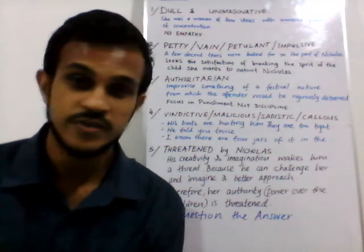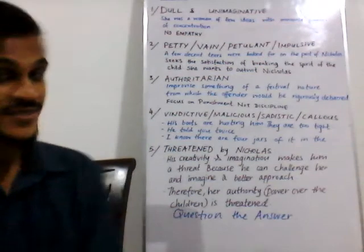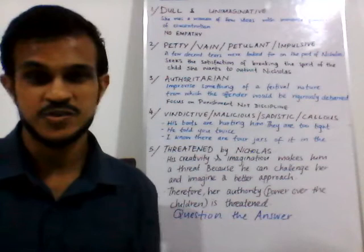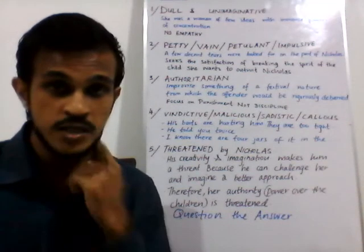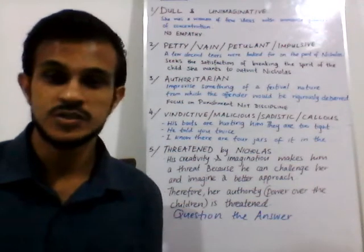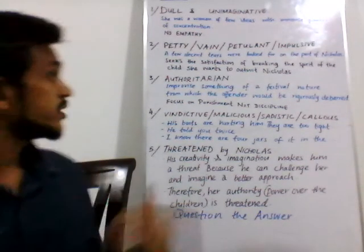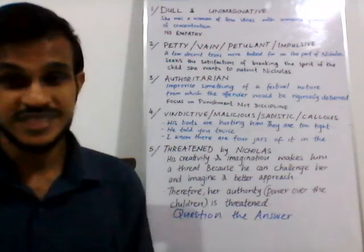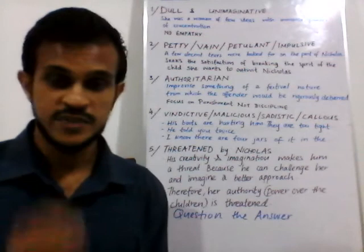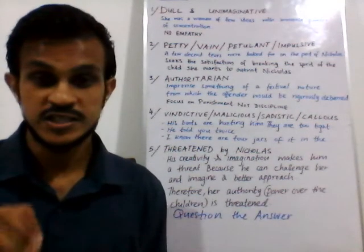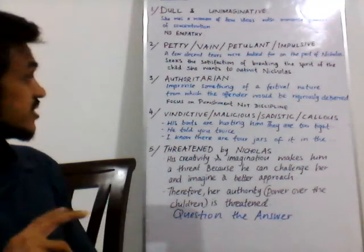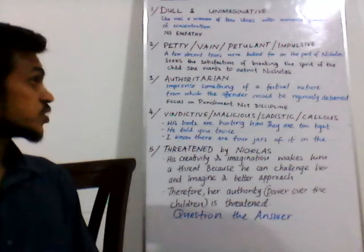The second characteristic is that she is petty, vain, petulant, impetuous, and impulsive — words that show she is quite immature. For example, it says 'a few decent tears were looked for on the part of Nicholas.' She gains a sense of achievement out of seeing Nicholas cry; she desperately wants to see him cry. That is a little strange — it shows that she seeks the satisfaction of breaking the spirit of the child and wants to outwit Nicholas.